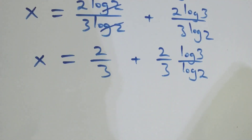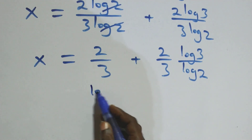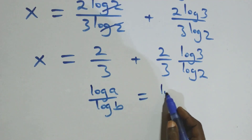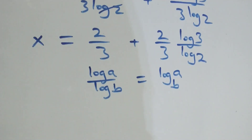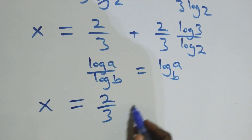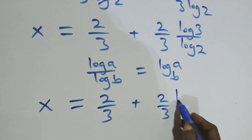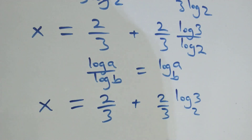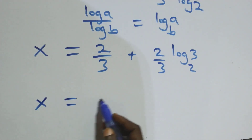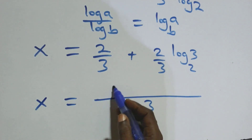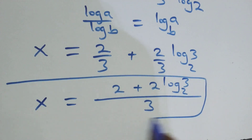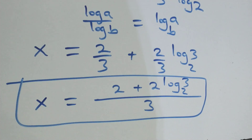We apply the change of base formula: when we have log A over log B, we can write this as log A to base B. So what we have here becomes x equals to 2 over 3 plus 2 over 3 times log 3 base 2. Bringing this together as one fraction, x equals to (2 plus 2 log 3 base 2) all over 3.